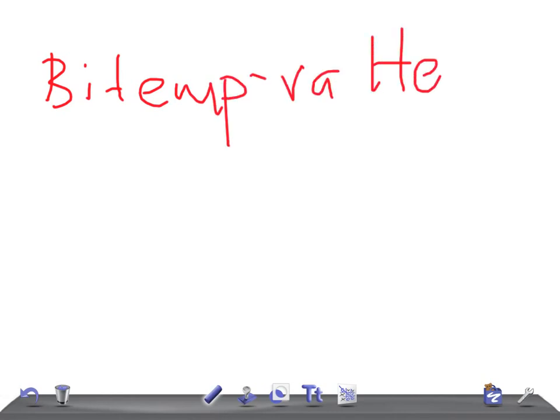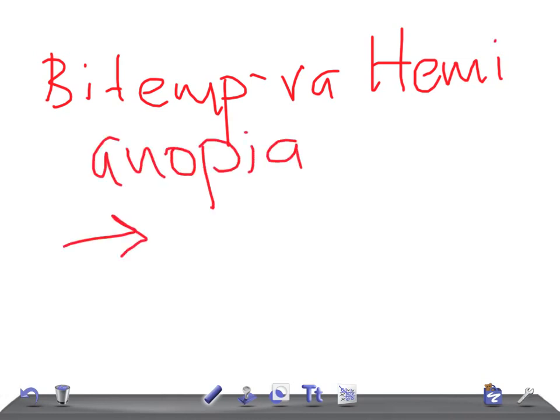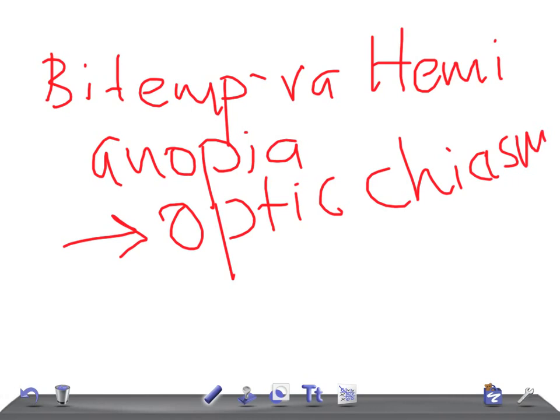Let me start with the most important: bi-temporal hemianopia. Where do you see? Where is the lesion? Tell me. Yes, it is seen in the optic chiasma. Right, it could be due to the pituitary tumor. Very important, try to memorize this.